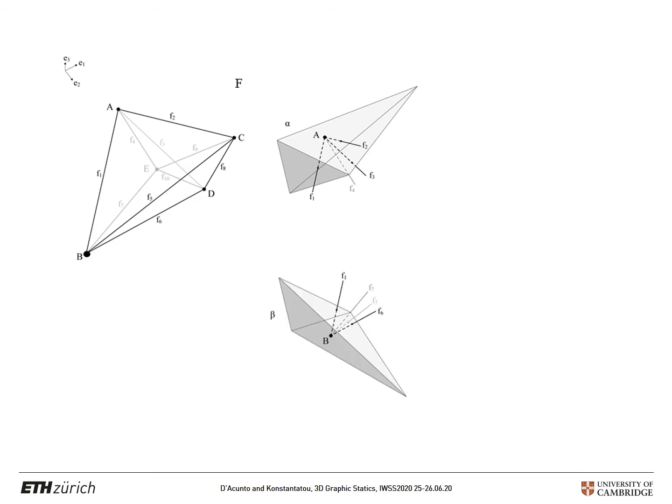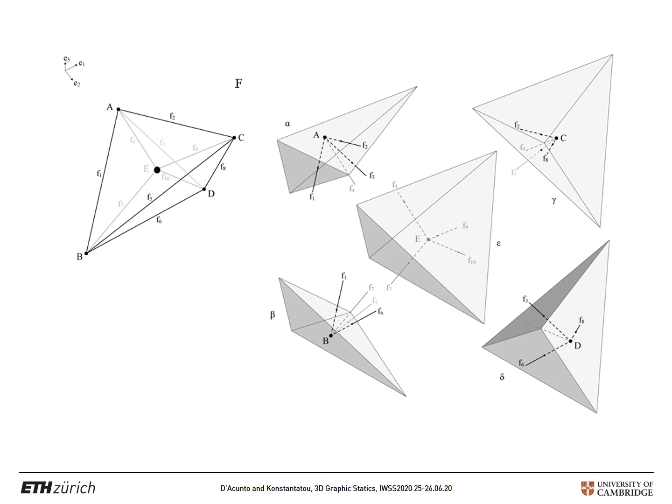If we do that for all the vertices, we end up with five cells, and we can see the duality between the vertices of the form diagram and the corresponding cells in the force diagram.